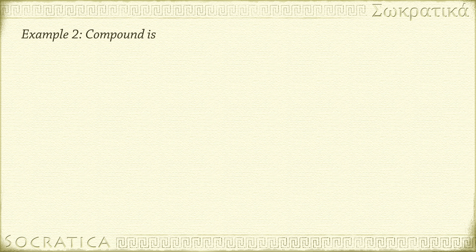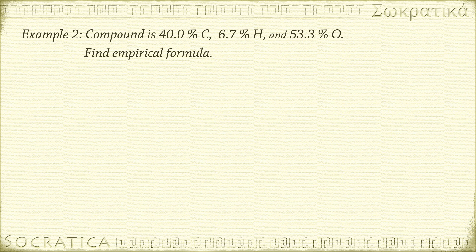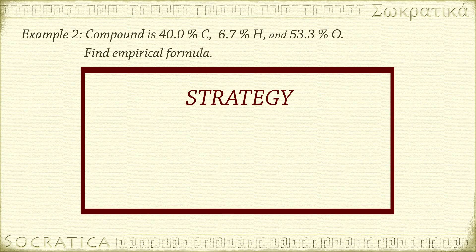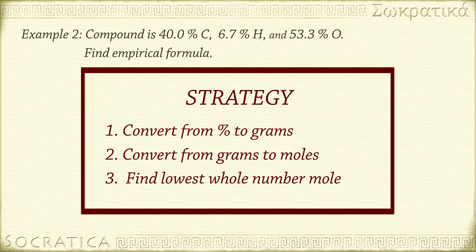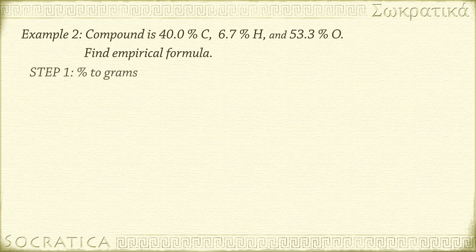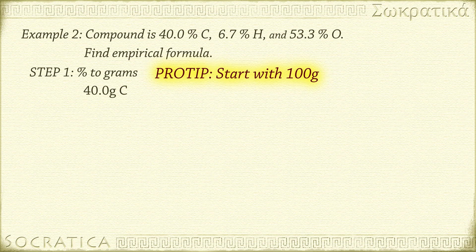Let's try a more complicated example. This compound has 40.0% carbon, 6.7% hydrogen, and 53.3% oxygen. What is the empirical formula? Step 1: assume 100 grams, so we have 40.0 grams of carbon, 6.7 grams of hydrogen, and 53.3 grams of oxygen.